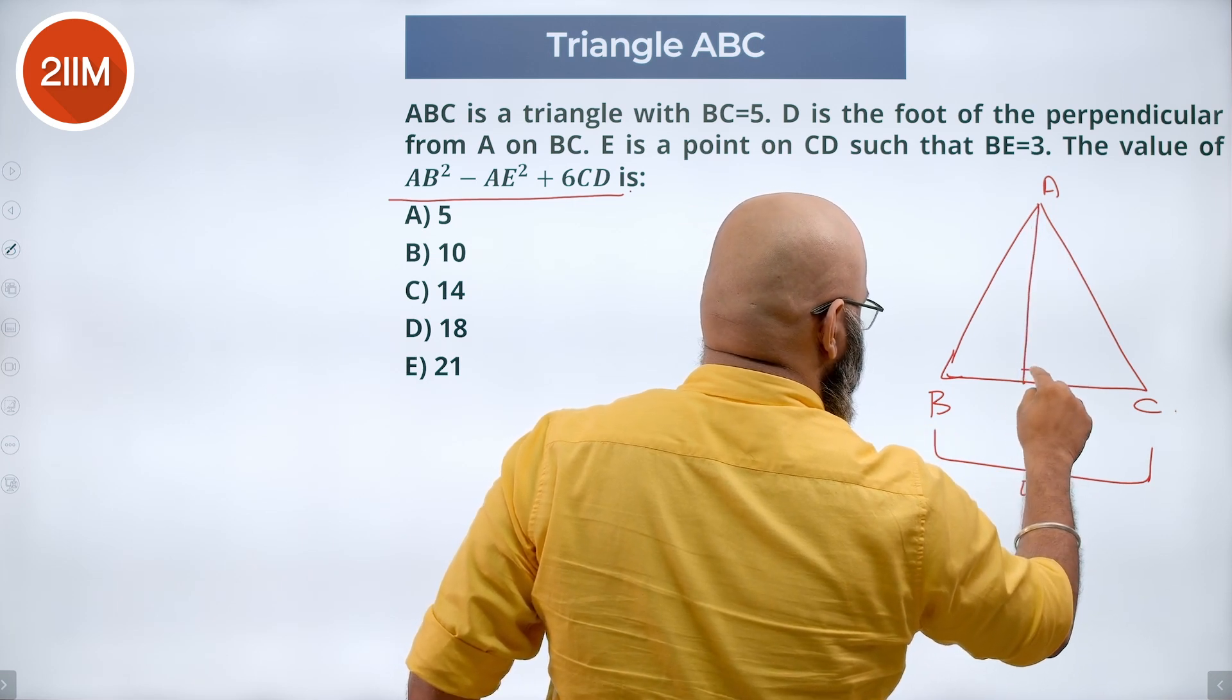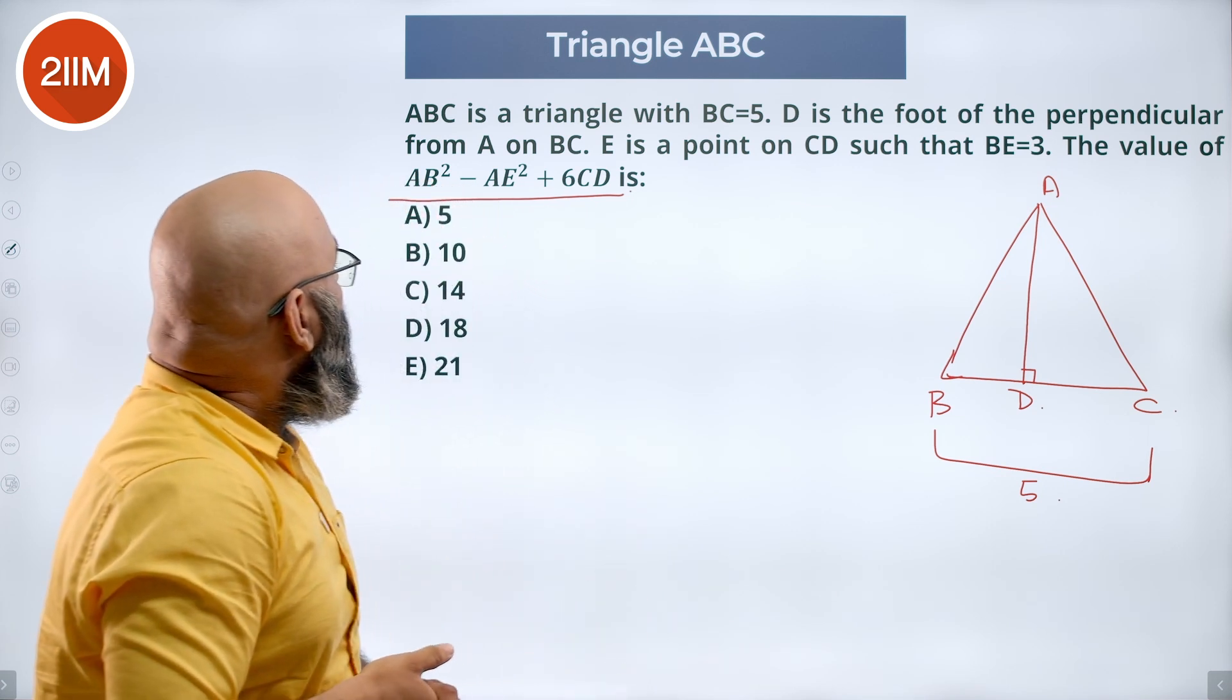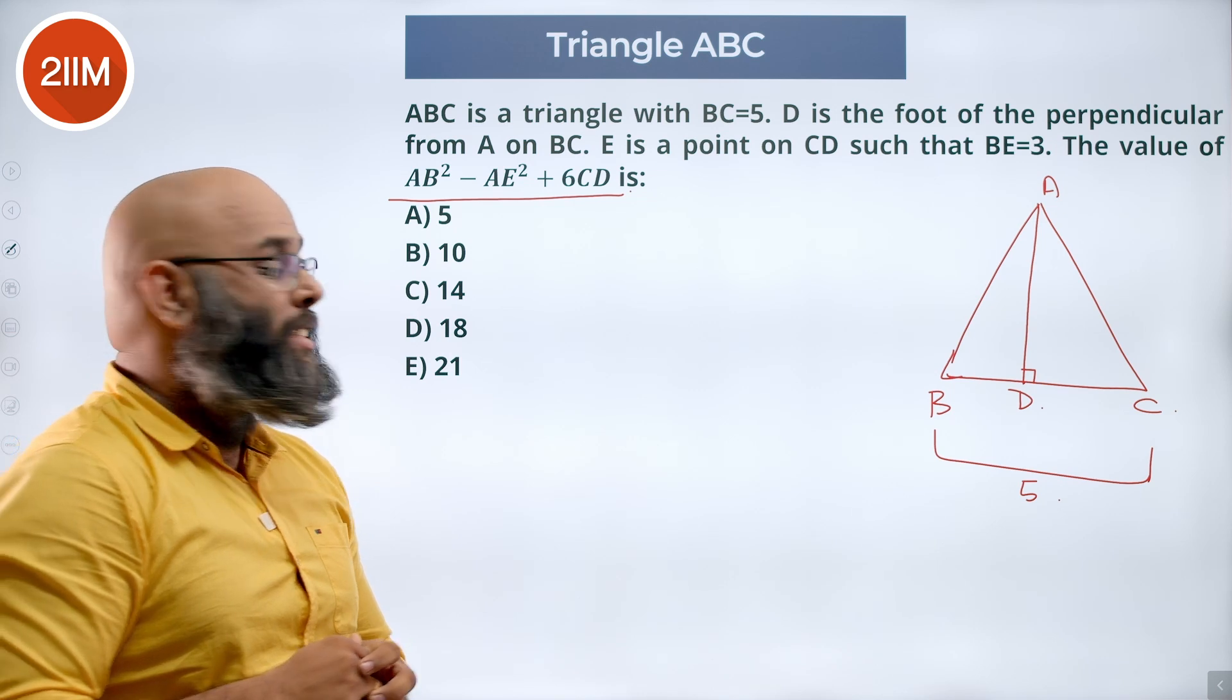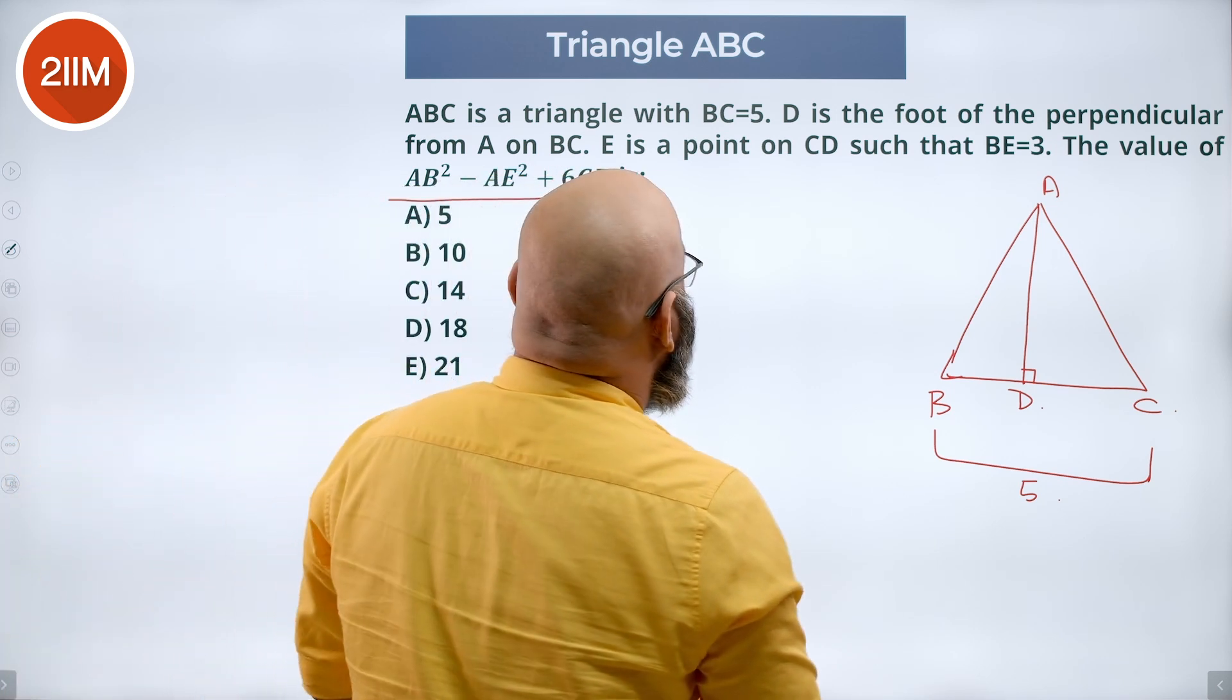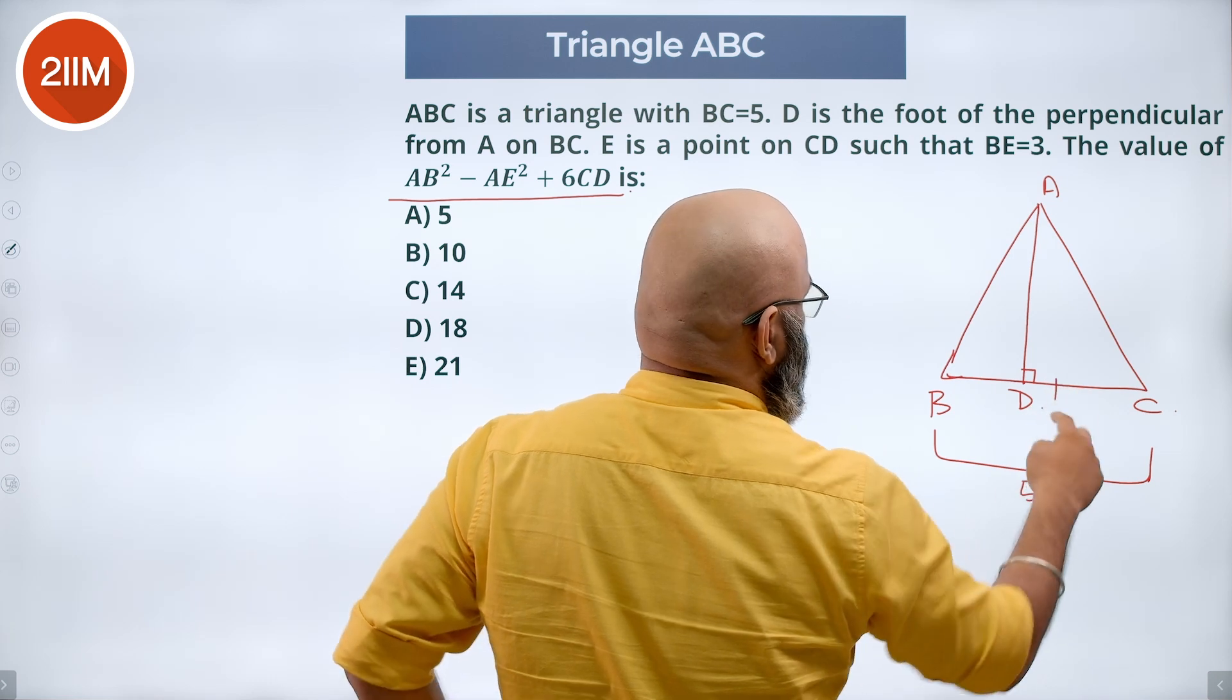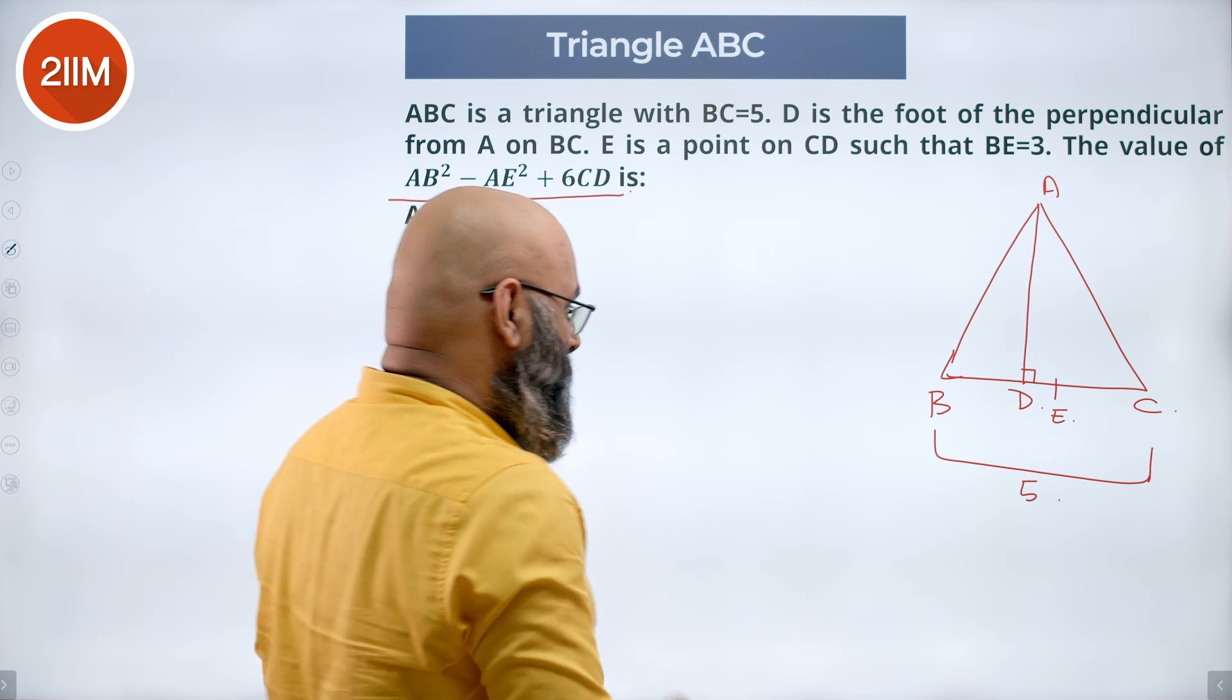So we have here D perpendicular and E is a point on CD such that BE is equal to 3. So there is a point, E could be anywhere, let's say here it is. This is E. BE is equal to 3.